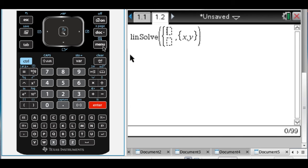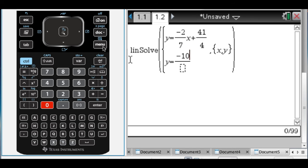And the first one is y equals negative 2 sevenths x plus 41 over 4. Press tab, tab. And then the second one was y equals negative 10 over 3 x plus 41 over 6. And then the variables are x and y. So when I press enter,